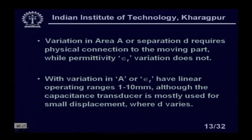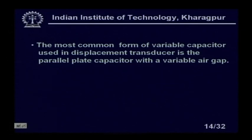With variation in A or εᵣ, there is a linear operating range, usually 1 to 10 mm. Capacitance is mostly used for small displacement where D varies. For larger displacement, we use other sensors like potentiometers. Usually, the capacitance sensor is used for smaller displacement measurements. The most common form of variable capacitor used in displacement transducers is a parallel plate capacitor with a variable air gap.